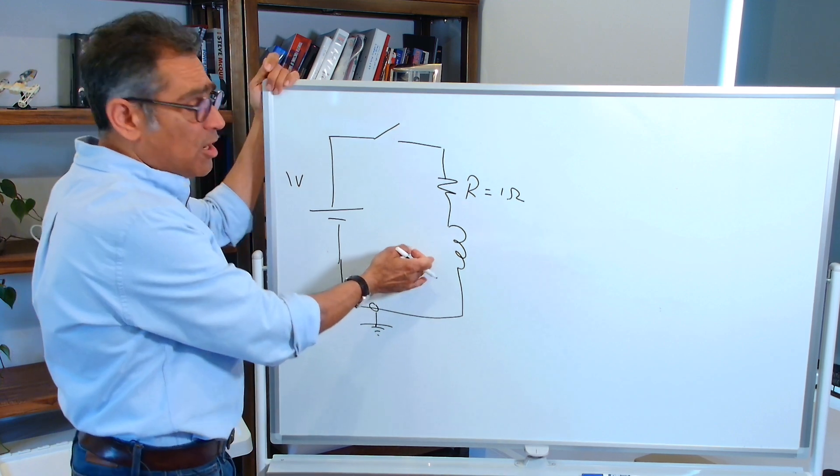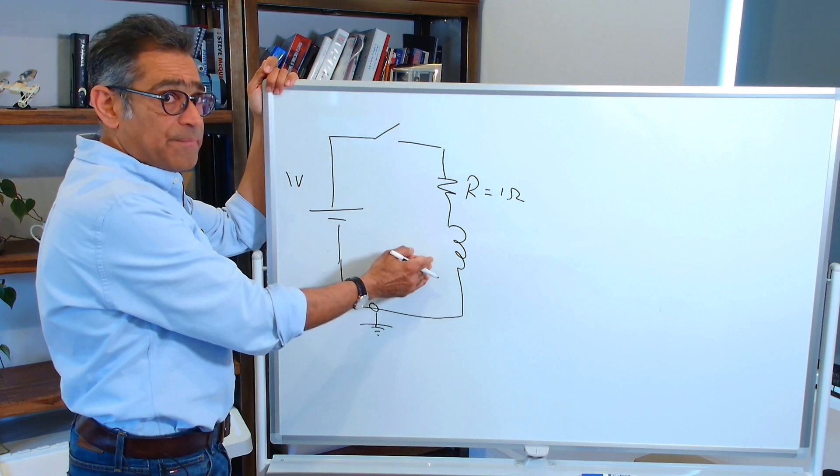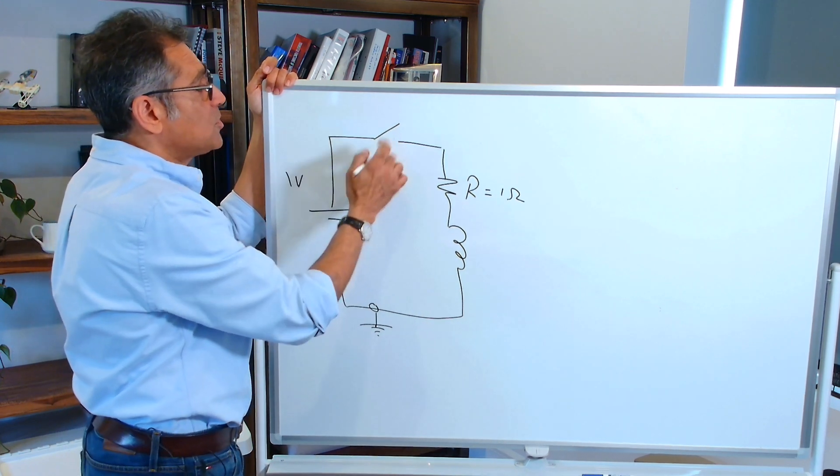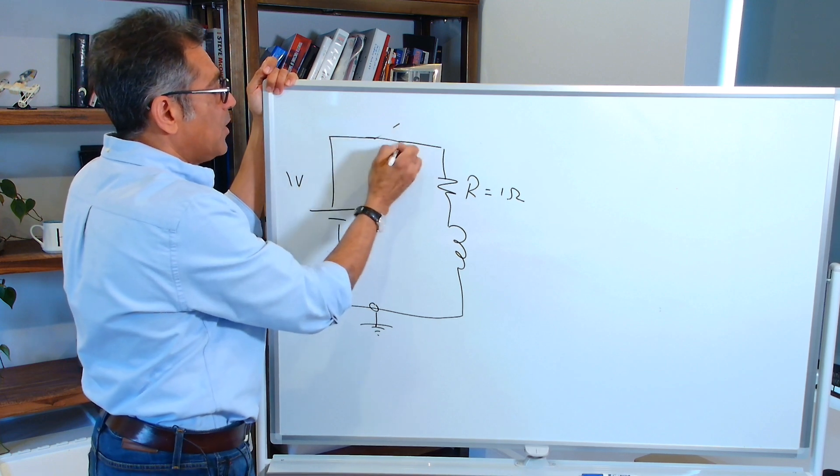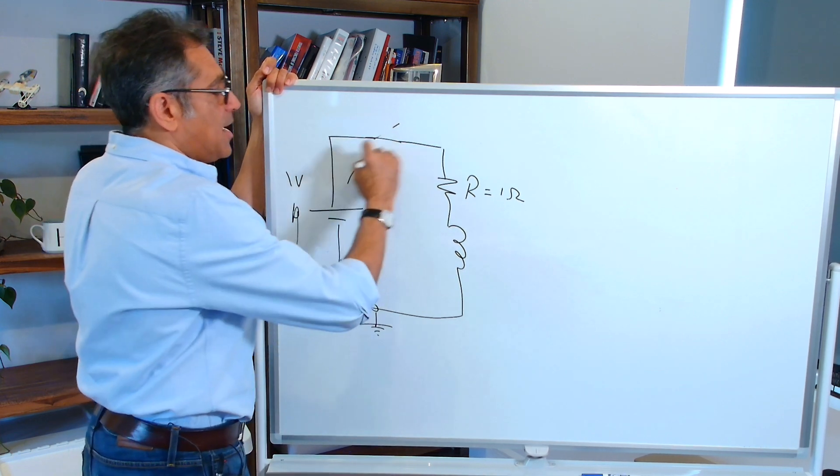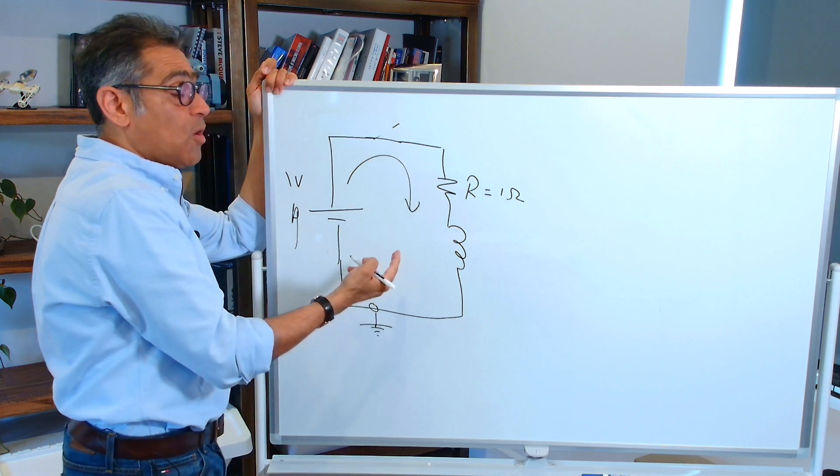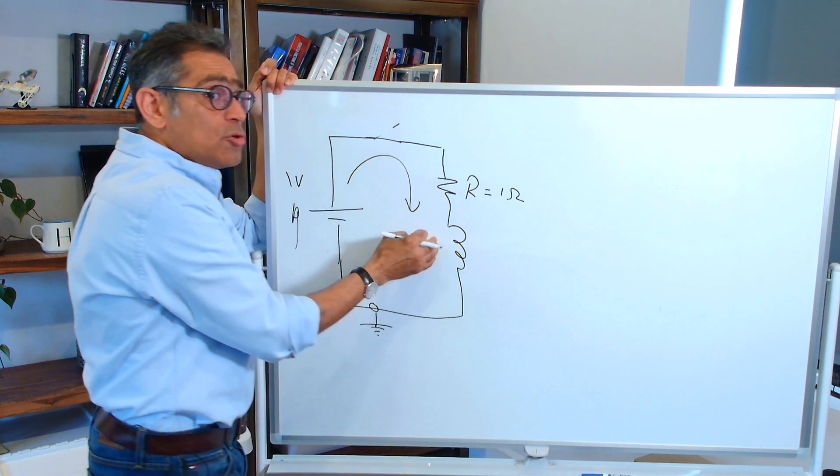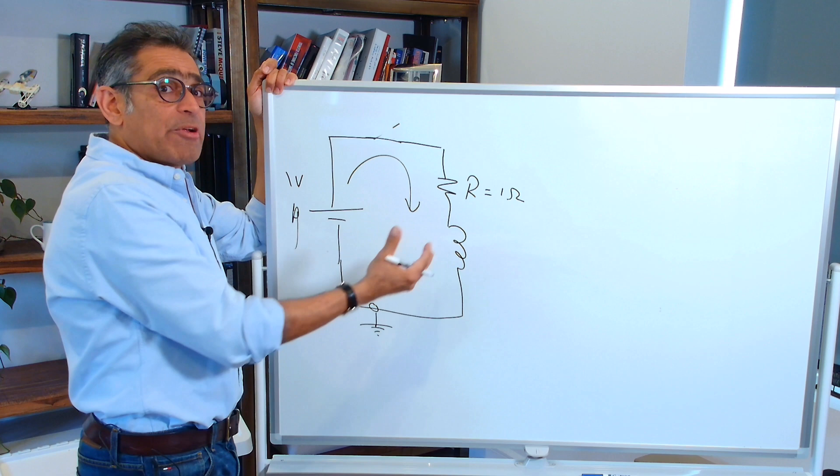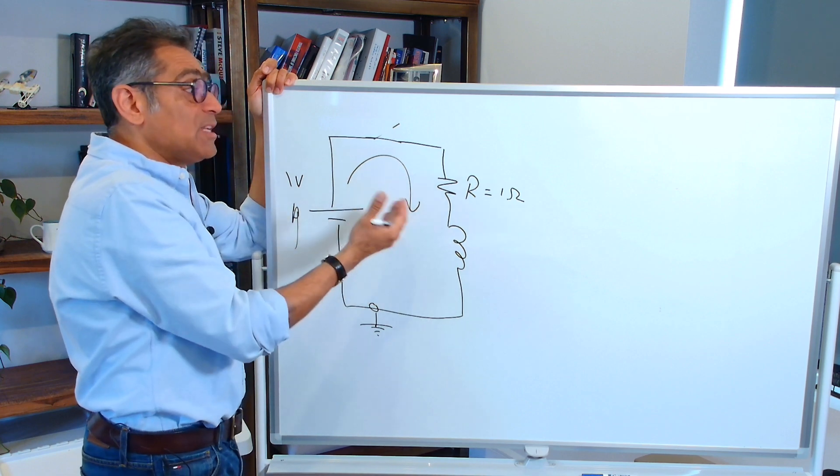Initially there is zero current going through the inductor. Now when I close the switch, there is one volt that is impressed on here and the current will start to flow. The inductor does not like the change of current from zero amps to whatever it is going to be.